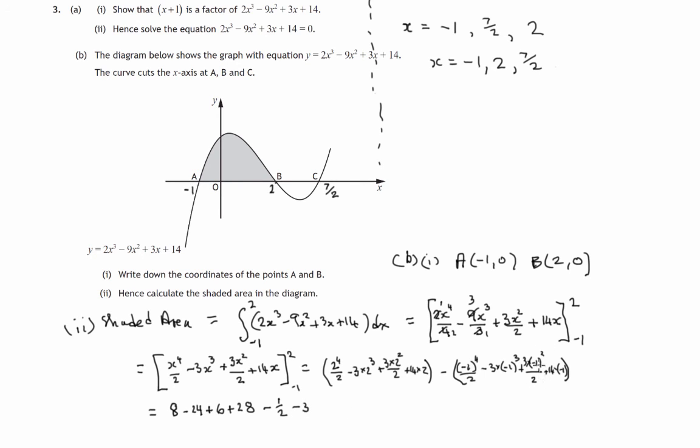This third term, negative 1 squared is positive 1, times that 3 is 3. That's 3 over 2, positive 3 over 2. But we're subtracting it, so that's minus 3 over 2. Finally, 14 times negative 1 is negative 14. And we're subtracting that negative 14. So that's positive 14.